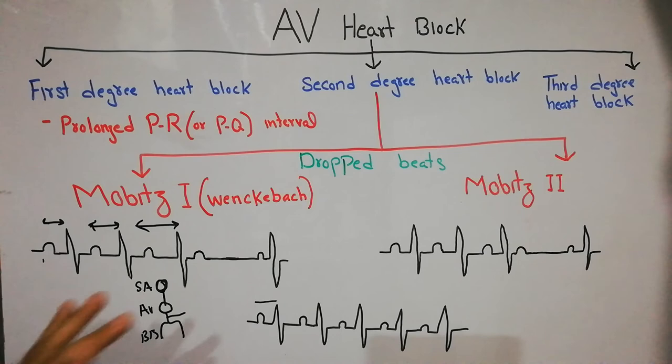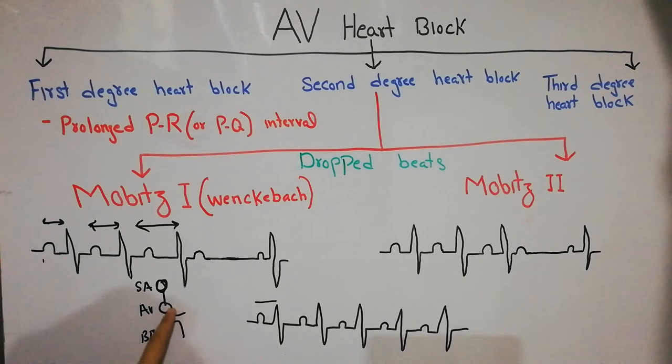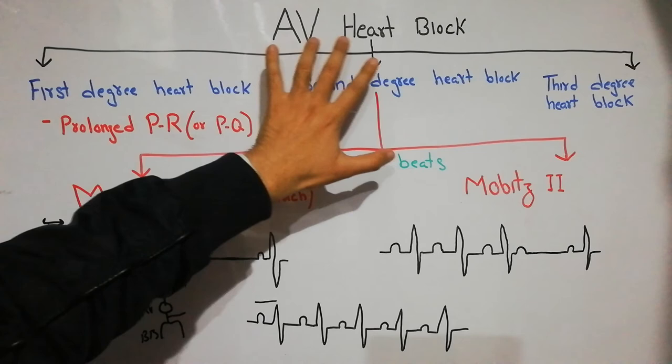Compare this with the first degree heart block: in first degree, all impulses — although a bit delayed — have been conducted through the AV node or Bundle of His. That's all about the second degree heart block. In the next lecture we will be discussing the third degree heart block.